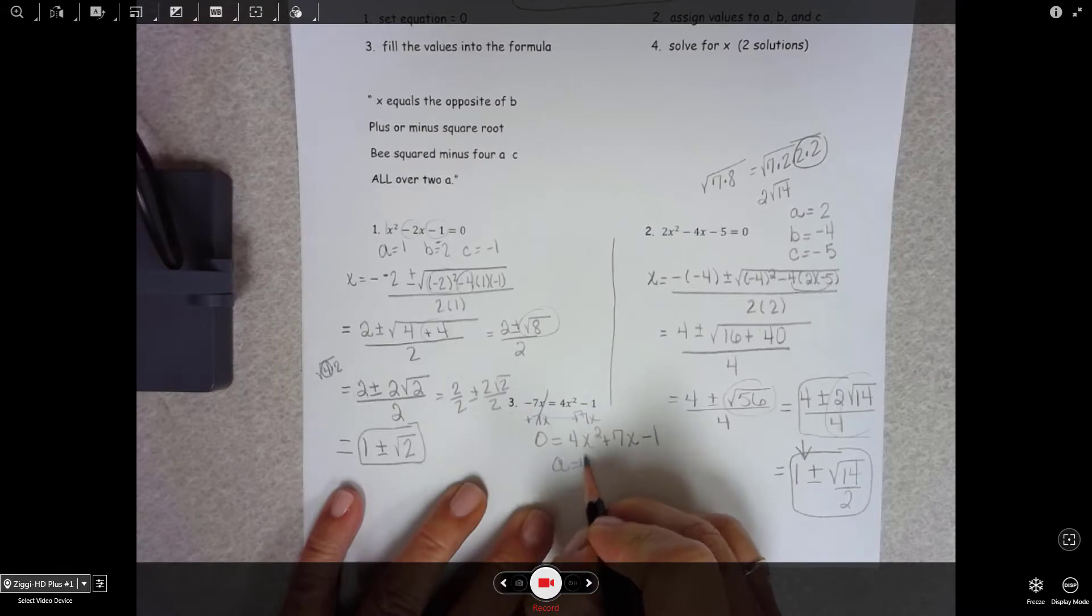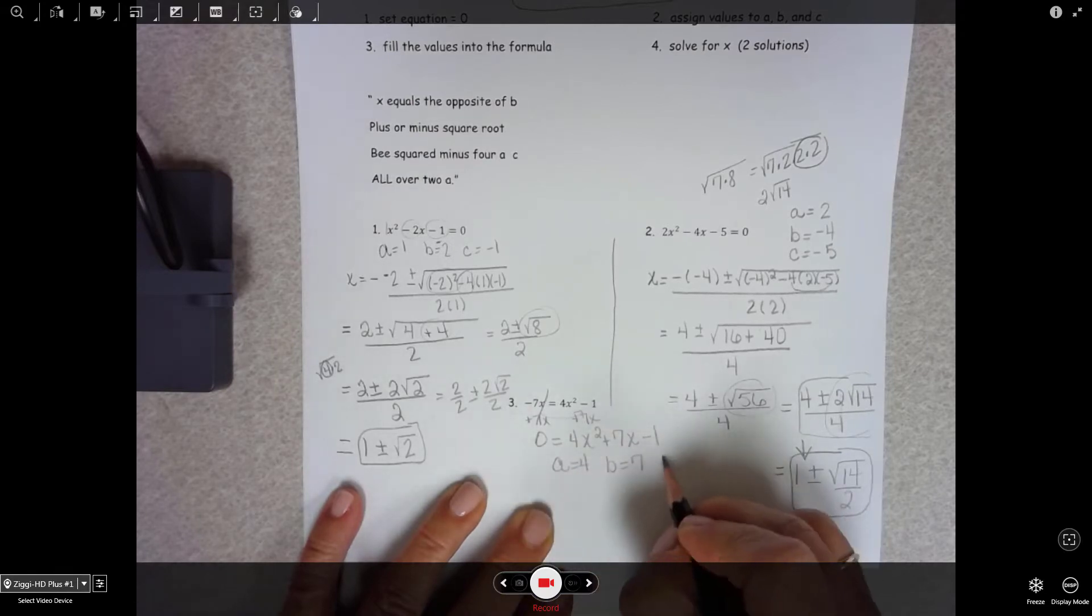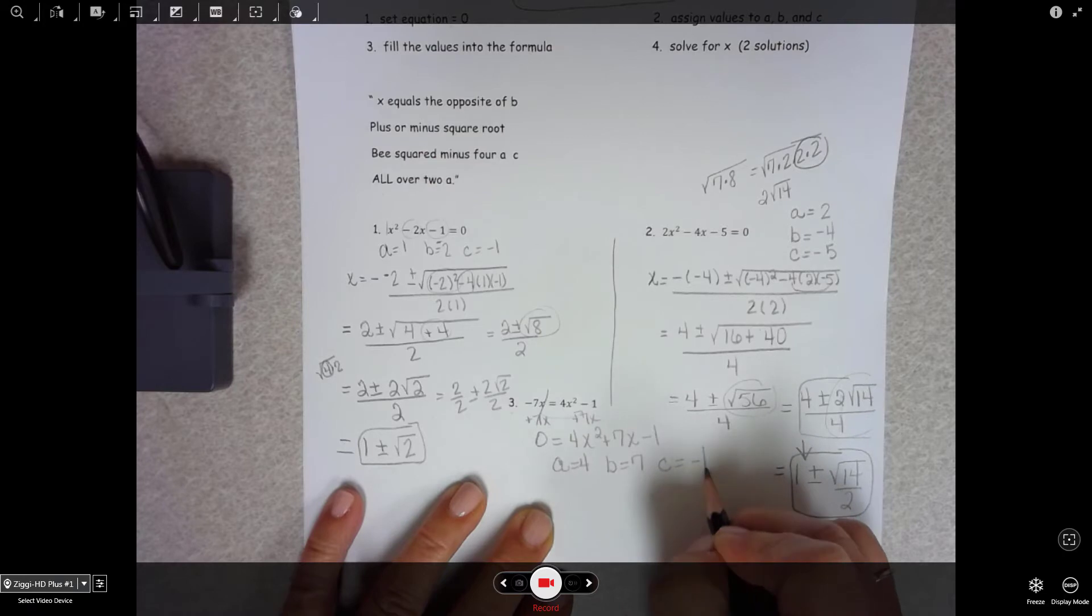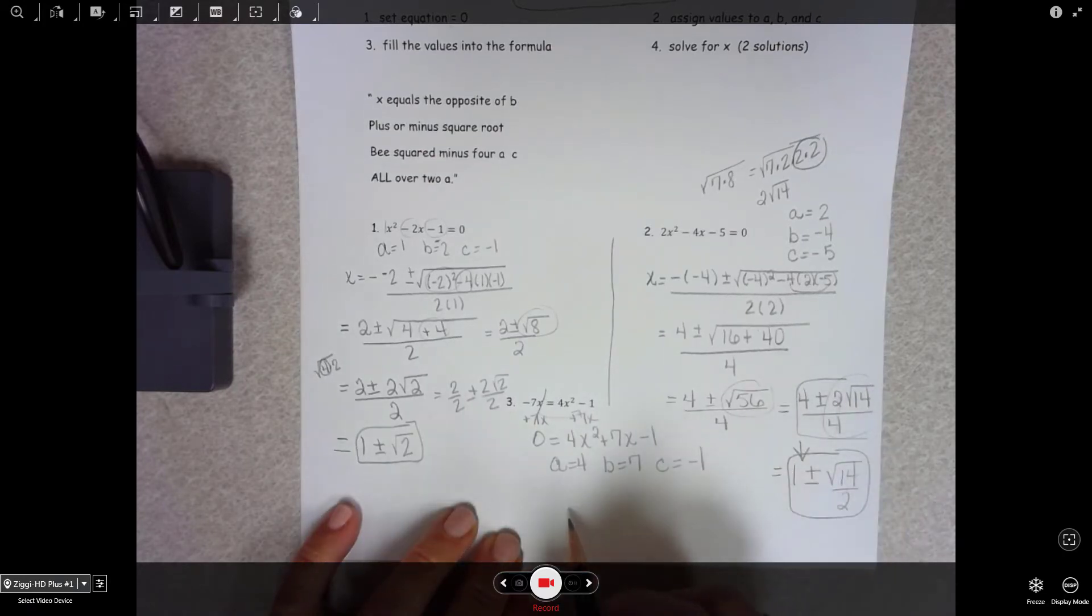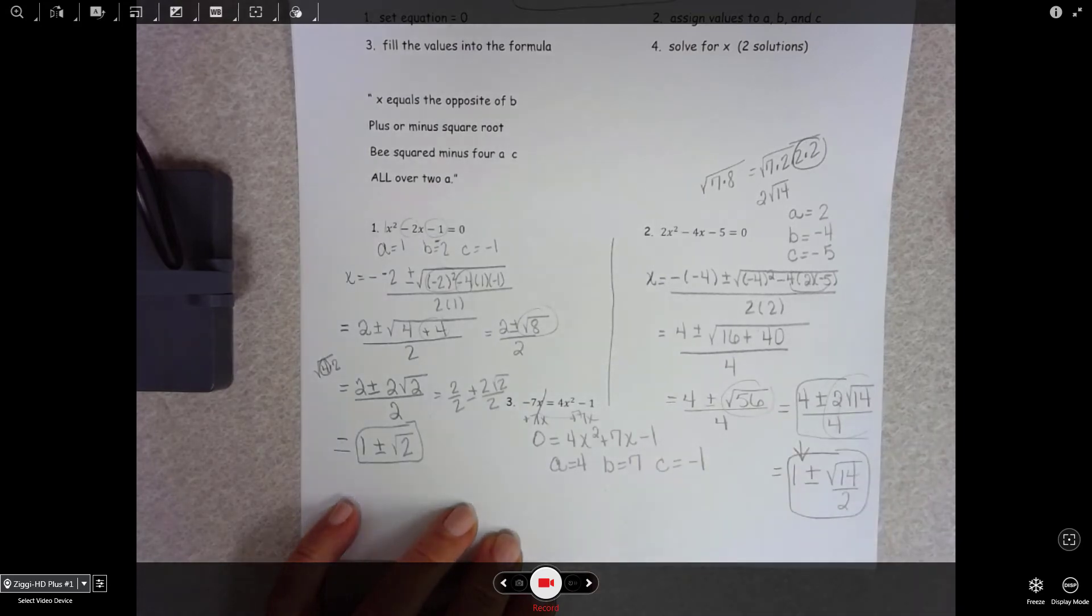A is 4, B is 7, and C is negative 1. Now work it using quadratic formula and bring me the answer in class and let's see how you did.